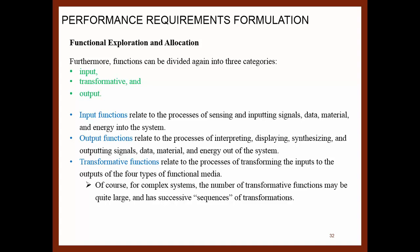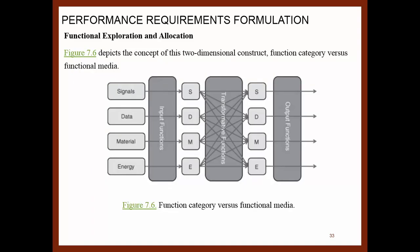For a complex system, the number of transformative functions may be quite large with successive sequences of transformation. Identifying inputs and outputs helps the engineer identify functions. The transformative functions may be easier to identify when examined in the light of system inputs and outputs. If you know this is my input and this is my output, then we can start defining what's going on in between. Keeping the function list minimal and high level using verb-object syntax: if you look at what the signal, data, material, and energy go through in transformation, you can see how the input and output functions connect.